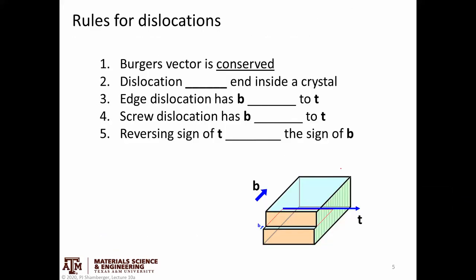A couple of rules to remember. First, the Burgers vector is conserved along a dislocation. If I follow that line, the Burgers vector is the same no matter how the direction of the dislocation line changes.